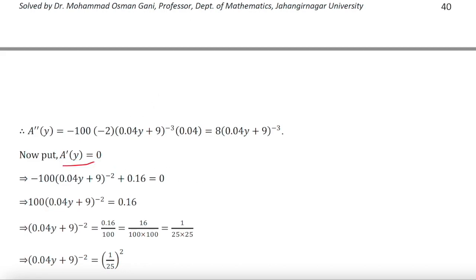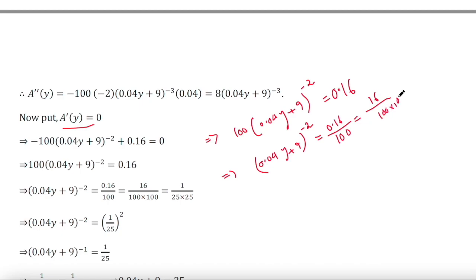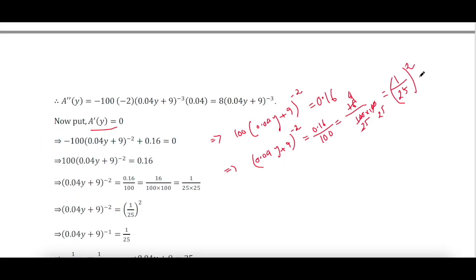First derivative equal to zero implies 100 times (0.04y + 9) to the power negative 2 equals 0.16, since the two negatives cancel. This implies (0.04y + 9) to the power negative 2 equals 0.16 divided by 100, which equals 16 divided by 10000, which equals 1/25 squared.